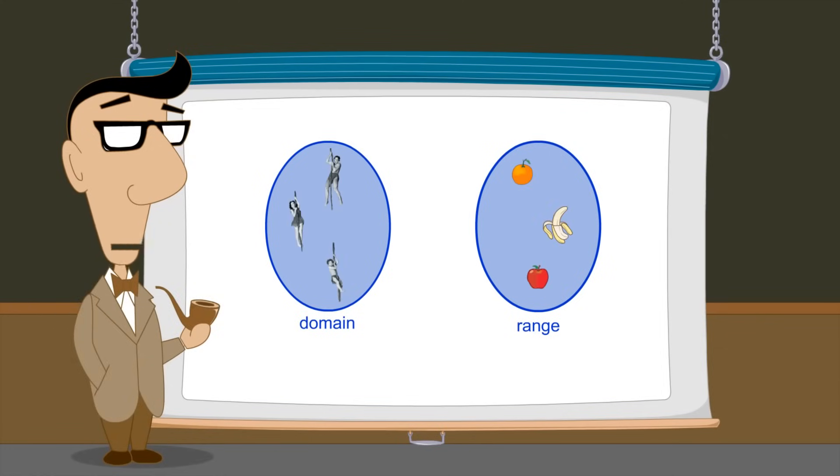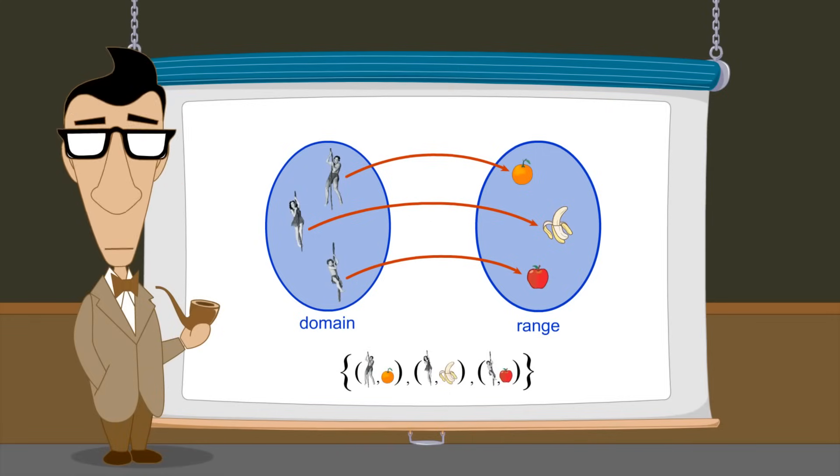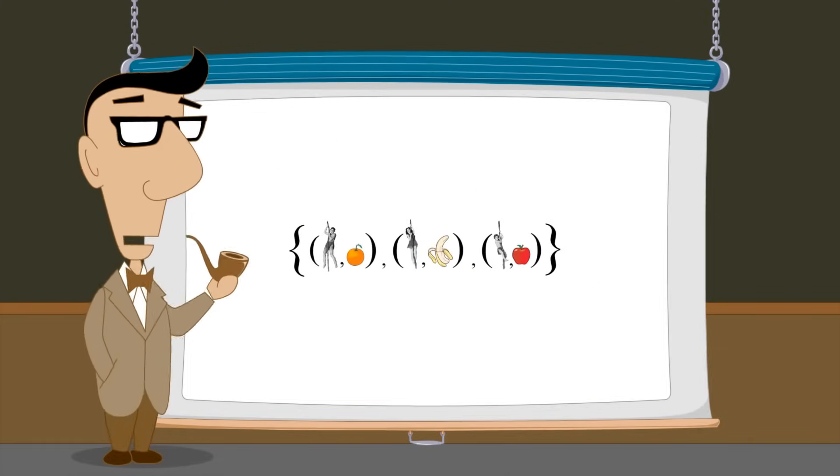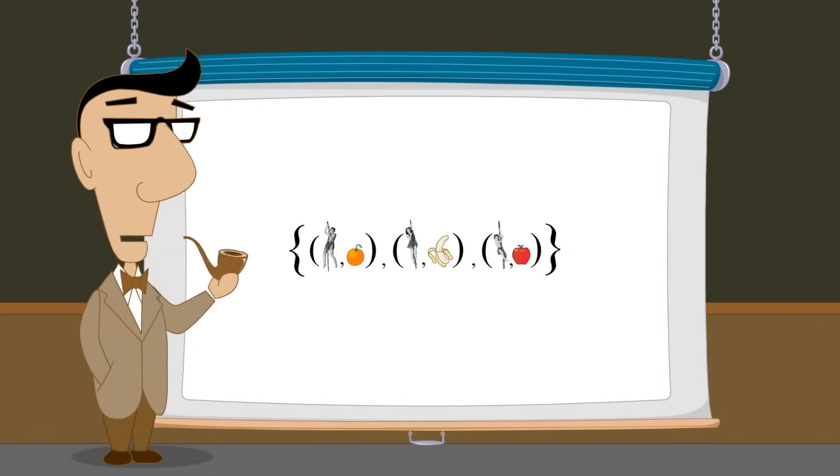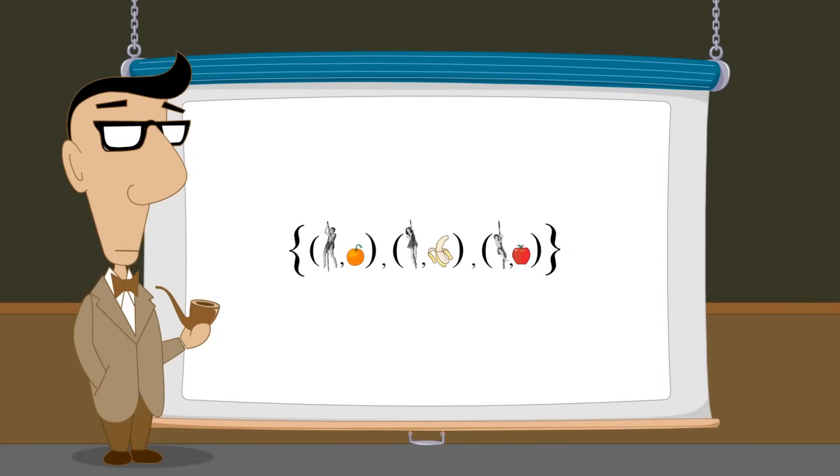Like any binary relation, functions can be represented as sets of ordered pairs. The set of ordered pairs which represents a function is sometimes referred to as the graph of the function. Since a function's domain and range can contain any type of elements, the ordered pairs in its graph can be pairs of any type of elements.